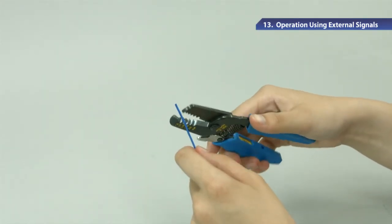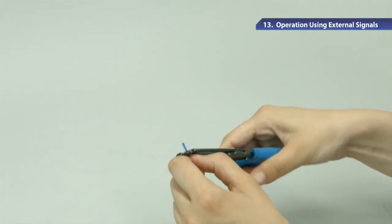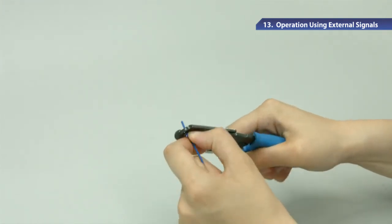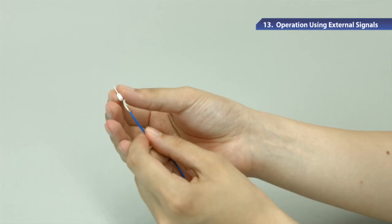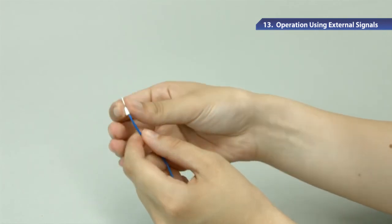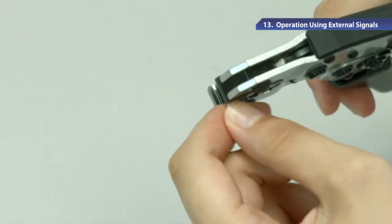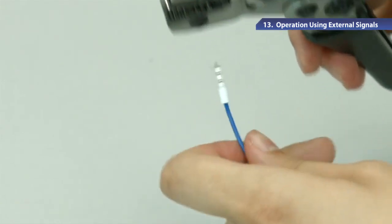Now I'm going to show you how to use the blade terminal. First, strip off about 10mm of the wire at the end. Insert the stripped part of the cable into the terminal and crimp the blade terminal onto the wire with a special tool.